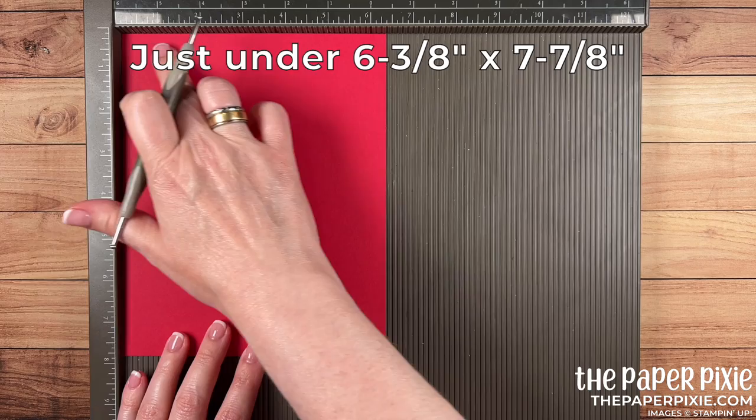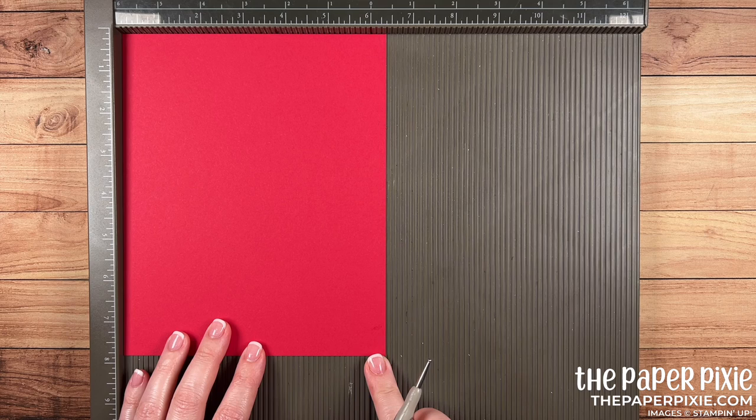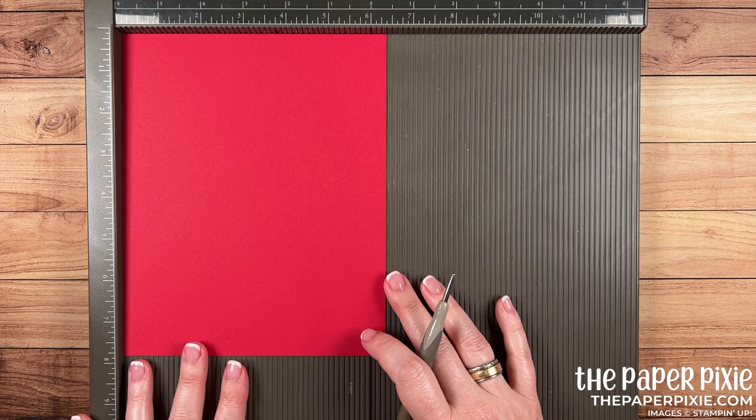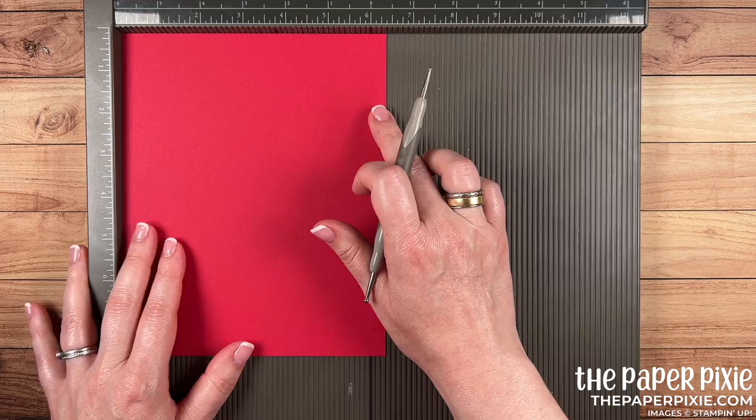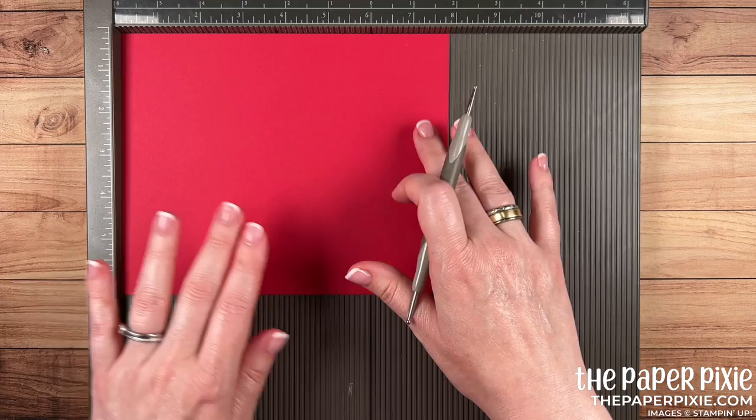For the lid we're starting with a piece of cardstock that measures 6 5/16 plus a little bit by 7 13/16 plus a little bit. I know those measurements sound crazy but it makes this lid fit perfectly over the base.